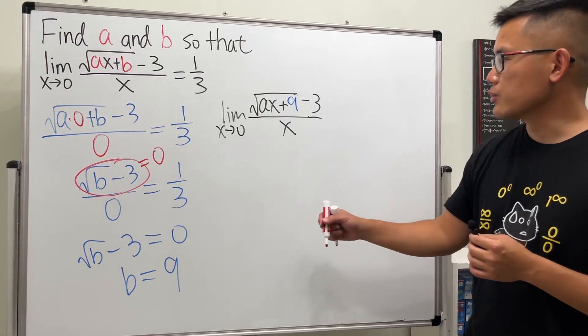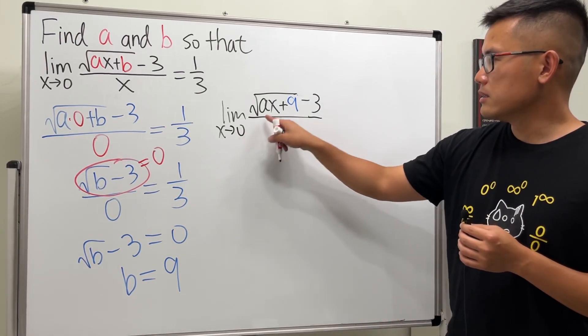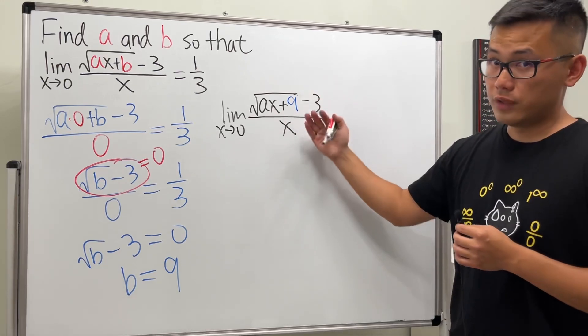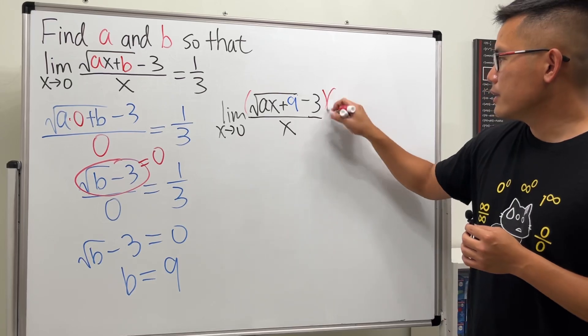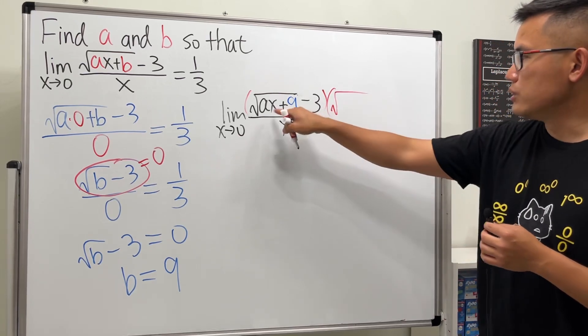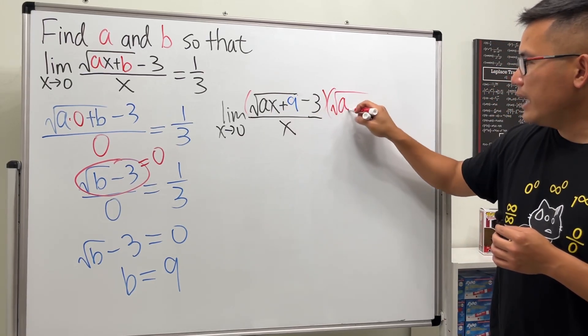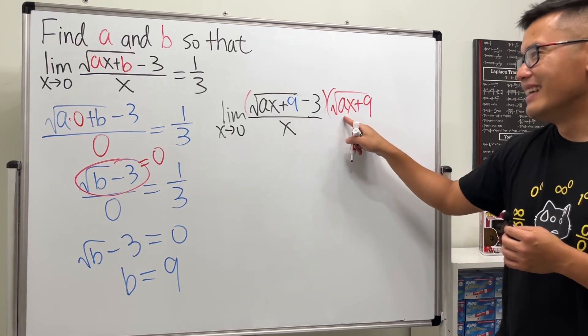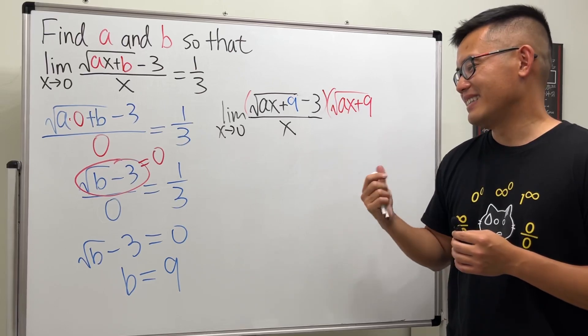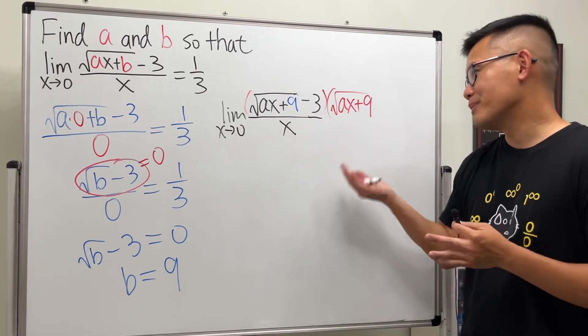We multiply the top and bottom by the conjugate, right? So let's go ahead and give this a try, especially now if you're plugging zero into here—here we have the zero over zero situation, so we have to do more work anyway. Let's go ahead and multiply by the conjugate.